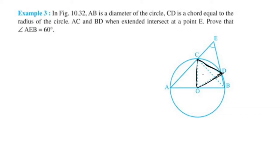Triangle COD is an equilateral triangle. AC and BD, when extended, intersect at point E. We need to prove that angle AEB is equal to 60 degrees.